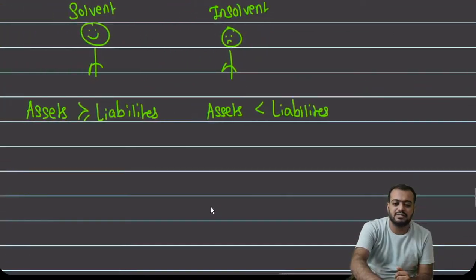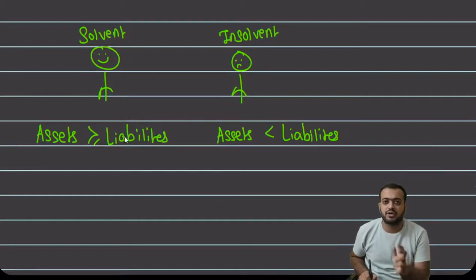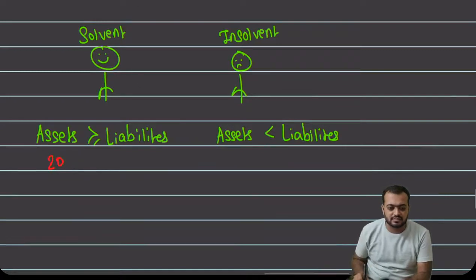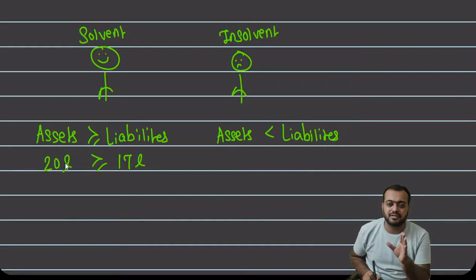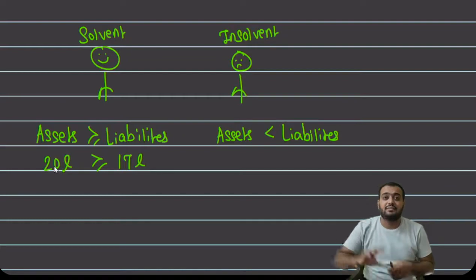So the conclusion is — अगर किसी भी person के पास उसकी ज़ायदाद ज़्यादा है और लोगों का देना कम है, तो वो होता है Solvent Person। For example: किसी person के पास 20 lakhs के assets हैं और liabilities हैं 17 lakhs की — तो वो person financially sound है। He is financially sound मतलब he has the capacity to pay off all the liabilities — वो पूरी liability pay कर सकता है।